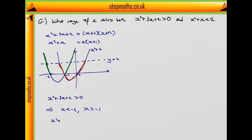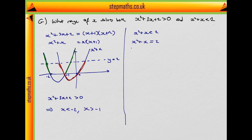What about x squared plus x strictly less than 2? Setting x squared plus x equal to 2, that means x squared plus x minus 2 equals 0, or x plus 2 times x minus 1 equals 0. So they intersect at x equals 1 and x equals minus 2. So we want it strictly less than 2, meaning we require x to be between minus 2 and 1.